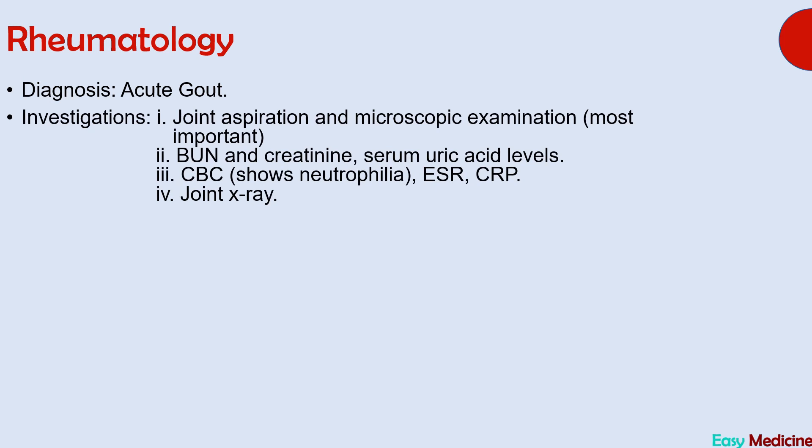Investigations for acute gout include joint aspiration and microscopic examination of the aspirate — the most important investigation for acute monoarthritis. Other investigations: blood urea nitrogen and creatinine, serum uric acid levels, CBC (showing neutrophilia), ESR, CRP, and joint X-ray. Joint aspirate from a gout patient shows negatively birefringent needle-shaped crystals. Pseudogout is differentiated by X-ray showing joint calcification and rhomboid-shaped crystals on joint aspiration.